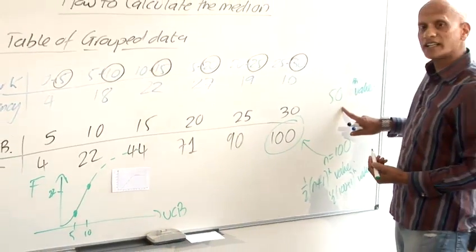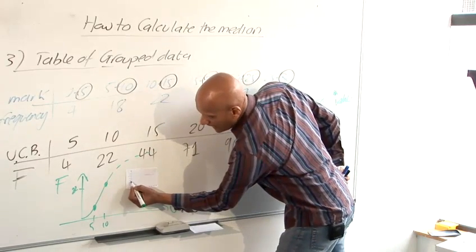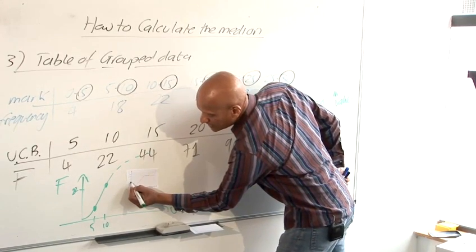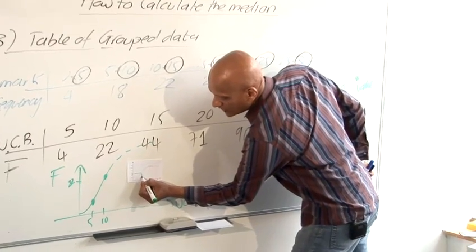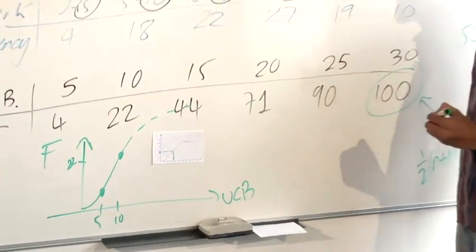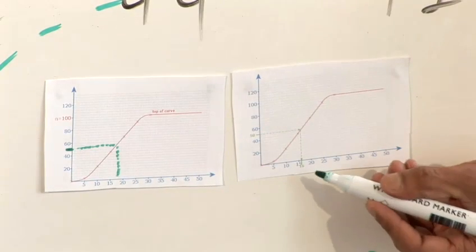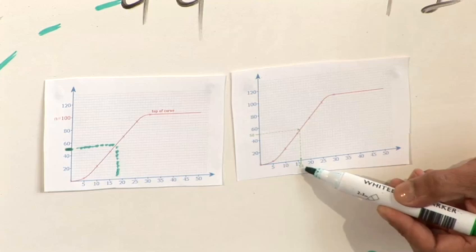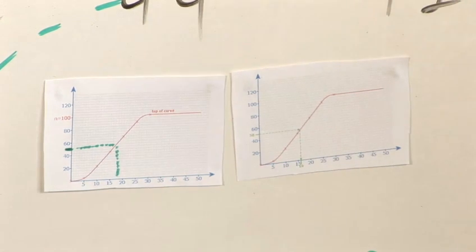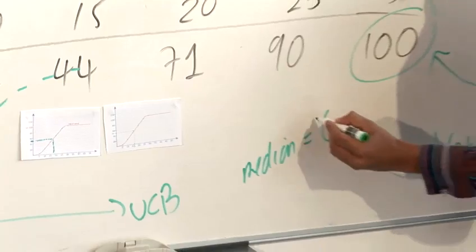Now I wanted to find the 50th value. So the 50th value would be here at 50. And so what I need to do is connect a line across that curve and then down to work out what that 50th value is. And again, I've done that on a separate graph. And you can see from my graph that going to 50 on the y-axis across to the curve and down gives me an answer of 16. So the median for this data is 16.